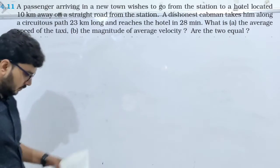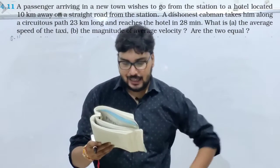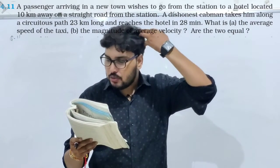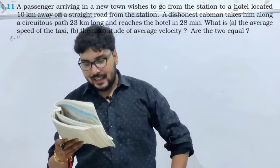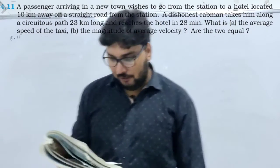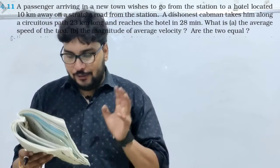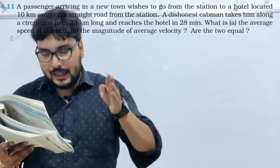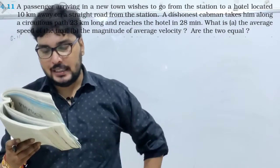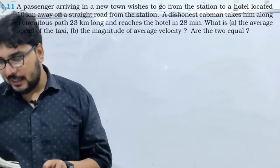Question number 11. A passenger arriving in a new town wishes to go from the station to a hotel located 10 kilometers away on a straight road from the station. A dishonest cabman takes him along a circuitous path 23 kilometers long and reaches the hotel in 28 minutes.